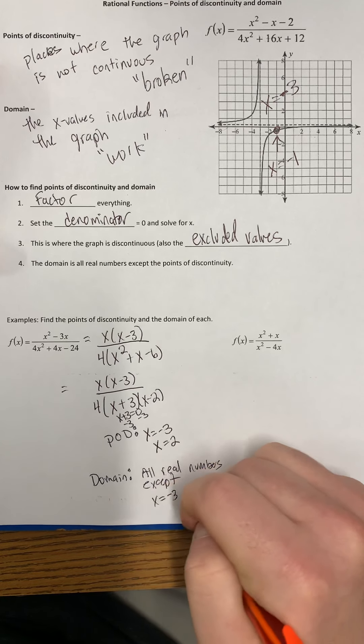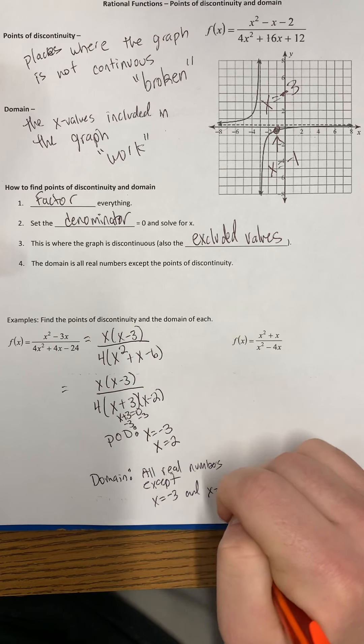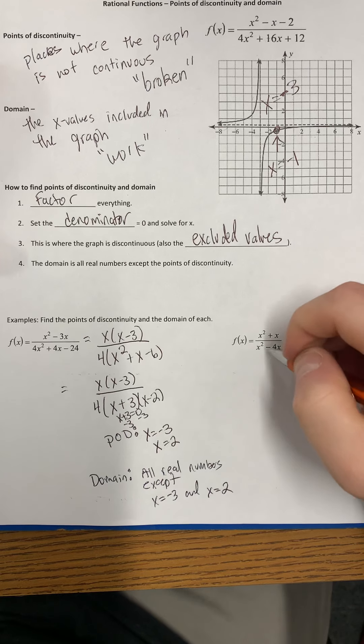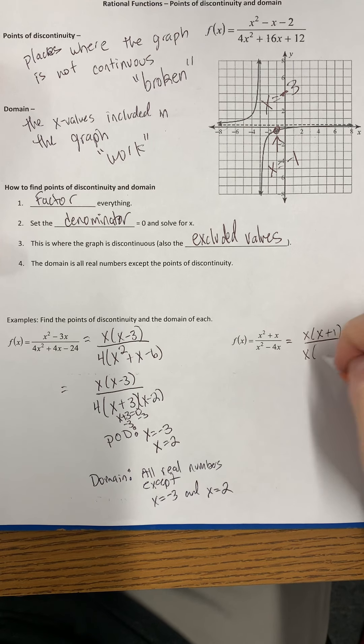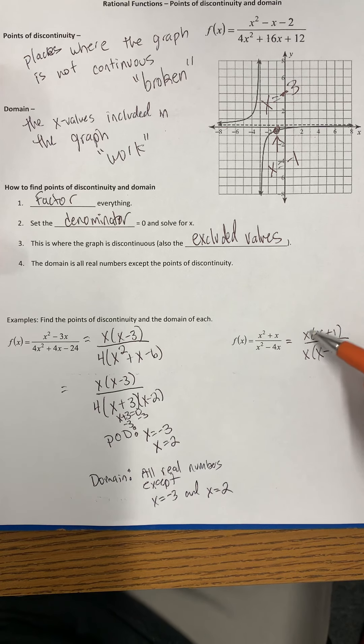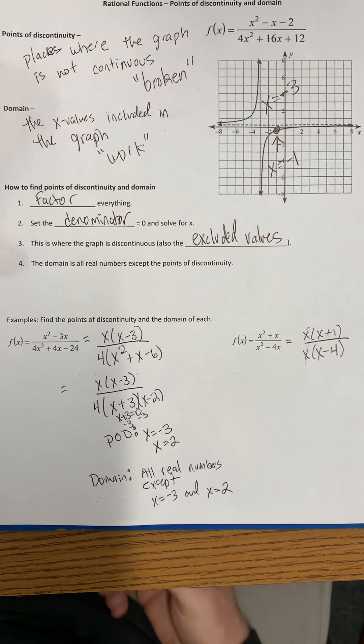X squared plus x we can divide by an x, we're left with x plus 1. X squared minus 4x we can also divide by an x and we're left with x minus 4. If we were simplifying, these x's would cross out. We'll talk about what that means in the next video.